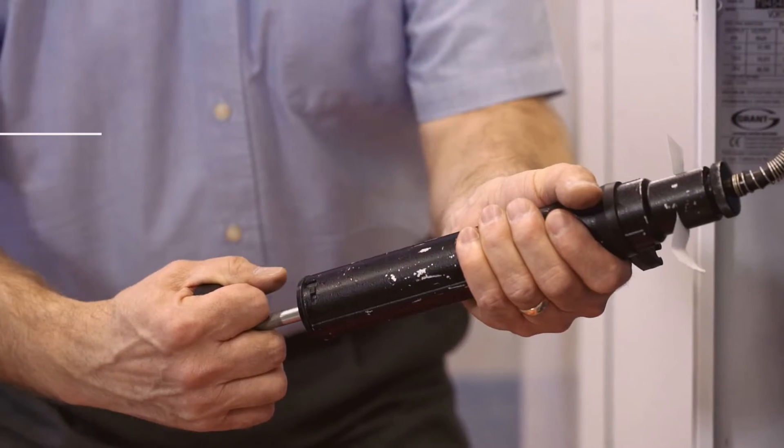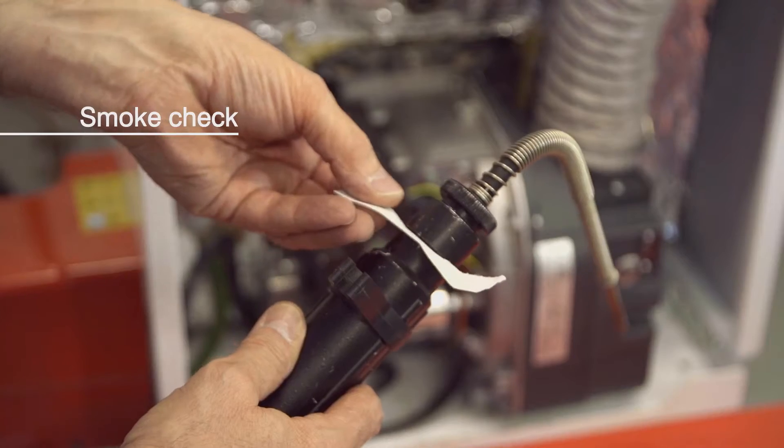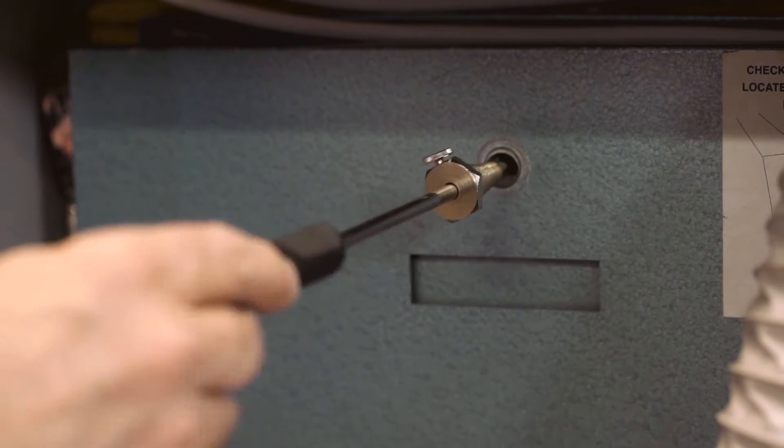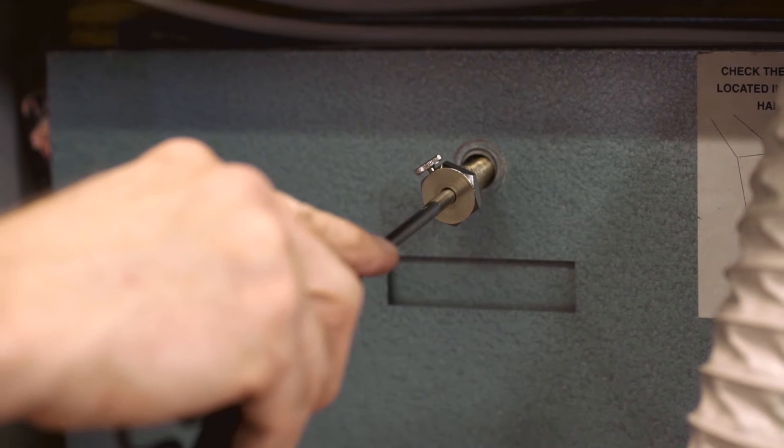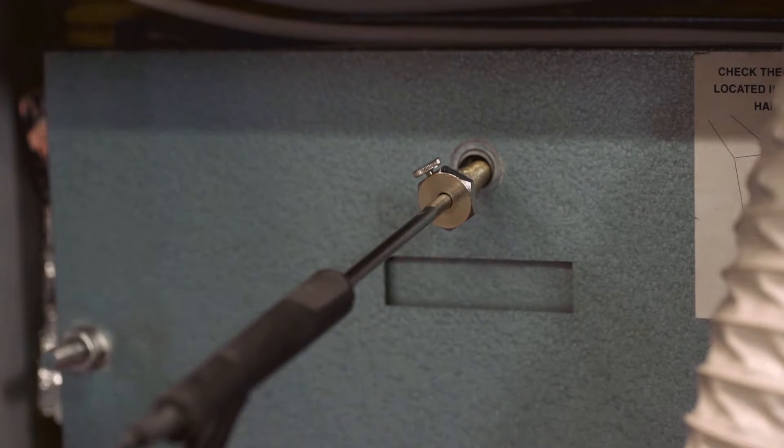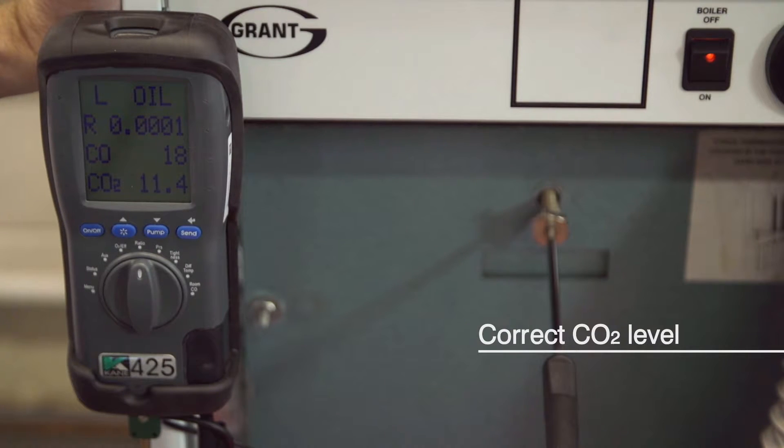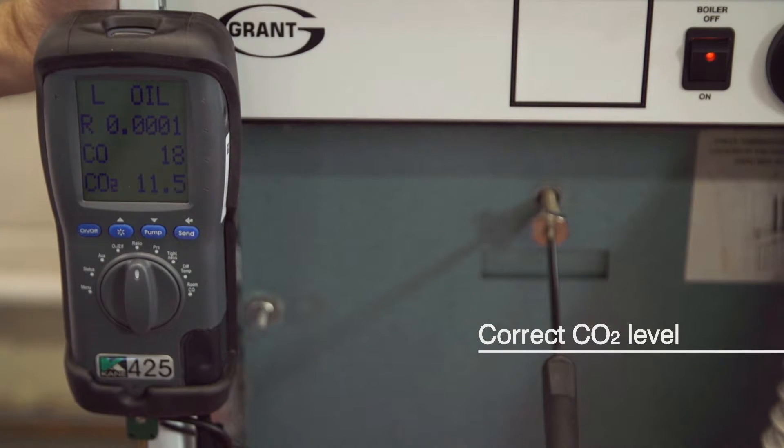Check the smoke with your smoke pump. If that's okay, put your combustion analyzer probe into the boiler or flue and check that the CO2 level in the flue gases is correct. If it's not as given in the installation instructions, you must adjust the air shutter to get the correct reading.